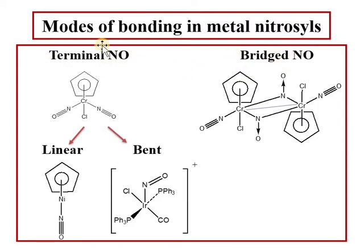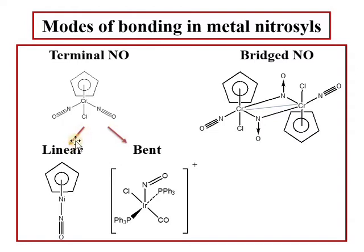For terminal nitrosyls, the mode of bonding is again divided into two types: linear nitrosyls and bent nitrosyls. The different modes of bonding of nitrosyls are due to one electron that is present in the pi anti-bonding molecular orbital. Due to this kind of bonding, which we can see first from the molecular orbital diagram, we can understand the difference between linear nitrosyls and bent nitrosyls.